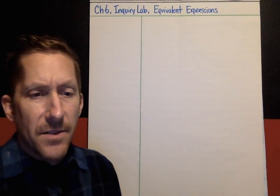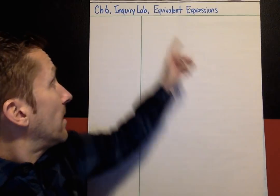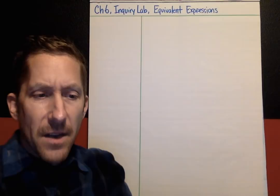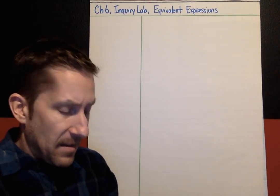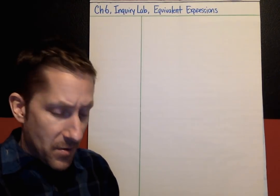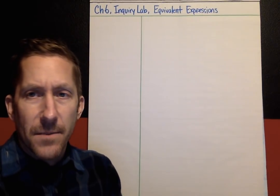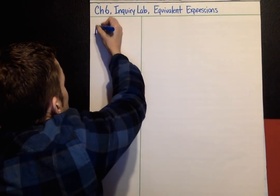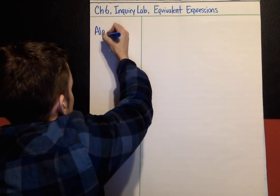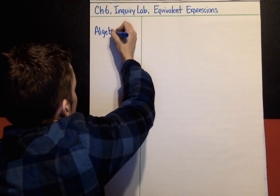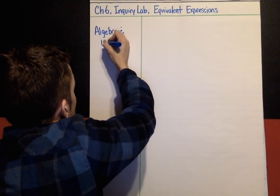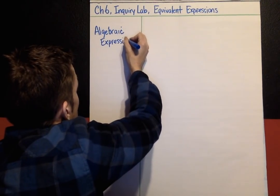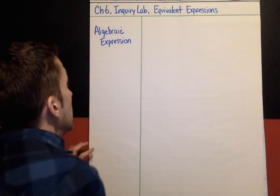Hi boys and girls, this is chapter six inquiry lab and we're going to be talking about equivalent expressions. We're going to learn some vocabulary in this lesson and also some repeat ideas, so we're building on some things we've already done. Here's one of them: the first thing I want you to write is an algebraic expression.